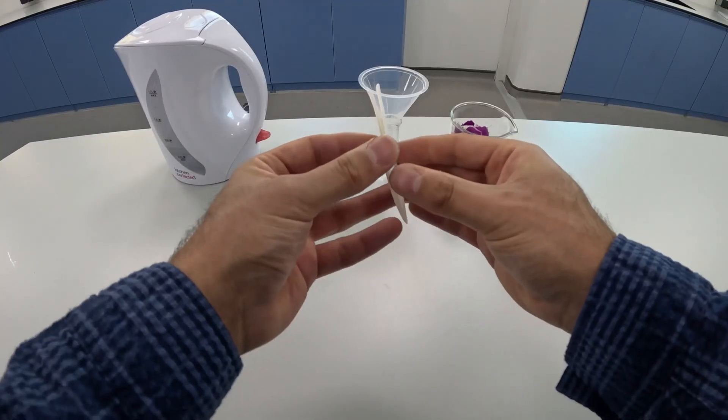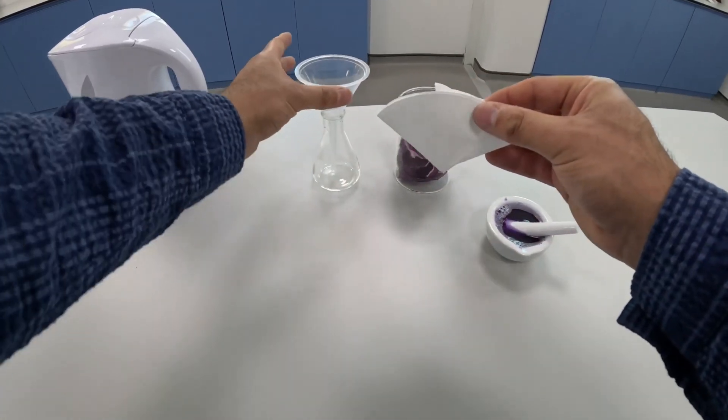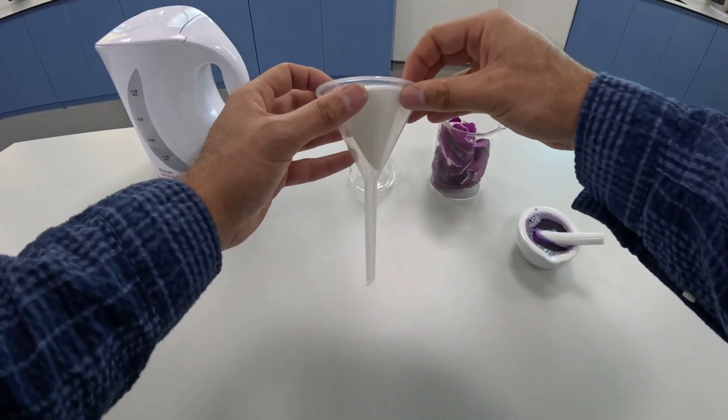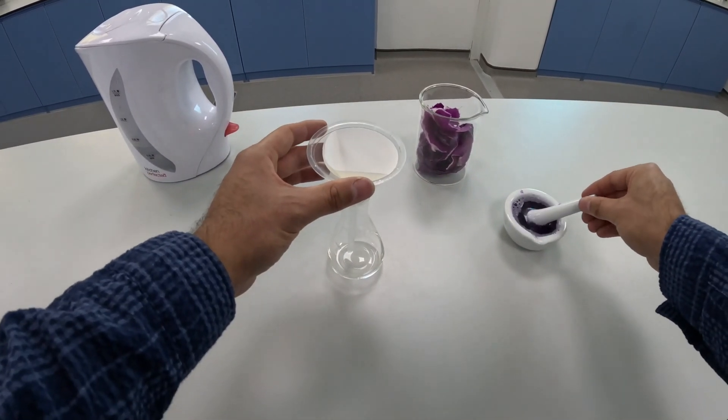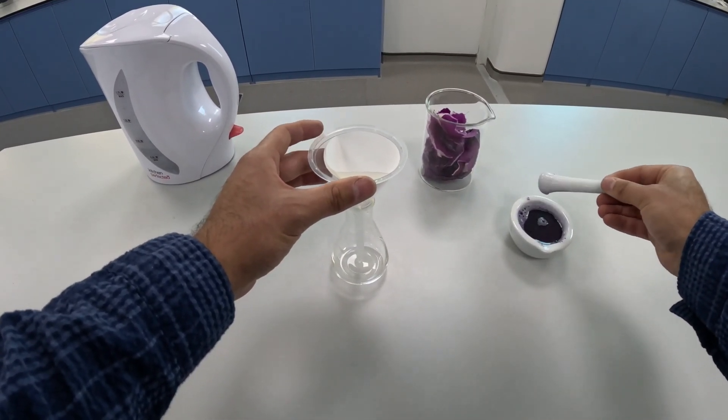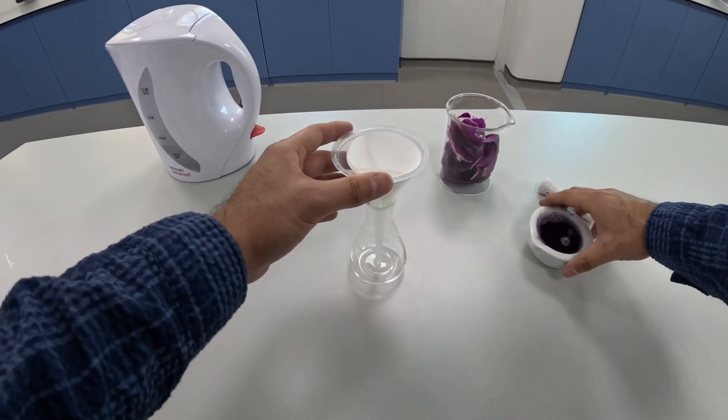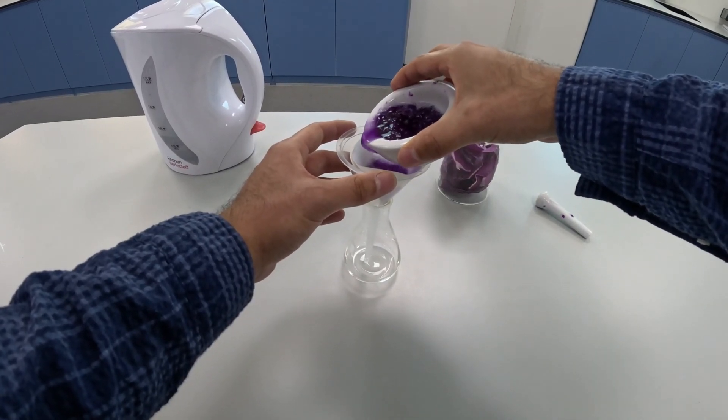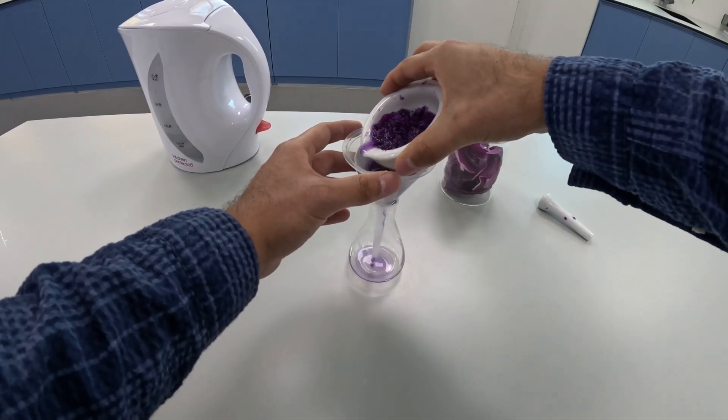And then we're going to open the filter paper up into a cone and that cone will fit nicely into the top of our filter funnel. Then we want to put this in the conical flask and slowly pour our mixture into the filter paper. We want to be careful not to overflow the filter paper.